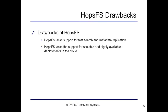HopsFS provides a distributed solution to the scalability bottlenecks present in HDFS. However, HopsFS lacks support for an efficient and fast search mechanism as well as metadata replication functionality. HopsFS also uses a block reporting algorithm deployed in HDFS that involves periodically going over the entire directory list, which is largely deemed inefficient as its overhead grows linearly with the number of data blocks. HopsFS also lacks support for scalable and highly available deployments in cloud environments. Many of these limitations come from a lack of research community around the architecture, though many cloud-native approaches to the HopsFS architecture have been developed in recent years.